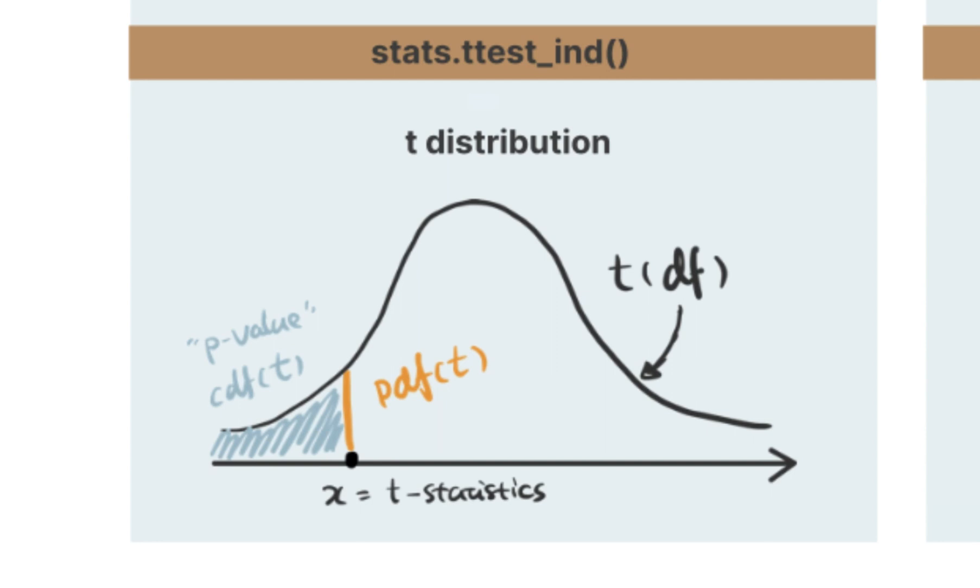There are some handy functions in Python calculating the probability in a distribution. For any x covered in the range of the distribution, pdf(x) calculates the probability density function of x, which can be represented as the orange line below, and cdf(x) is the cumulative density function of x, which can be represented as the cumulative area.